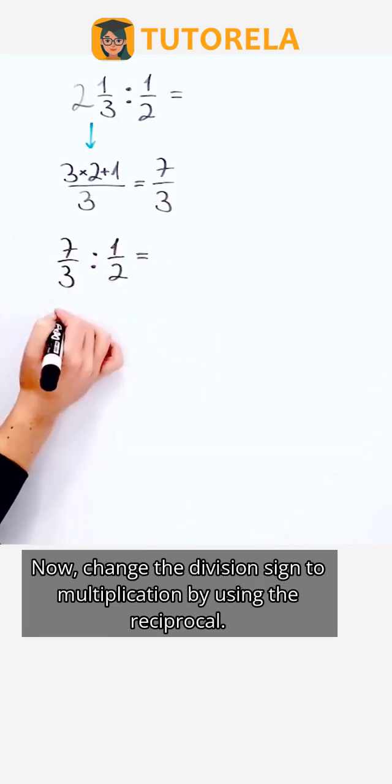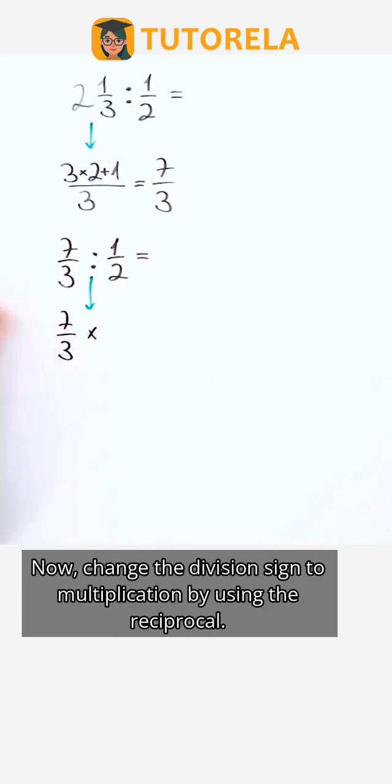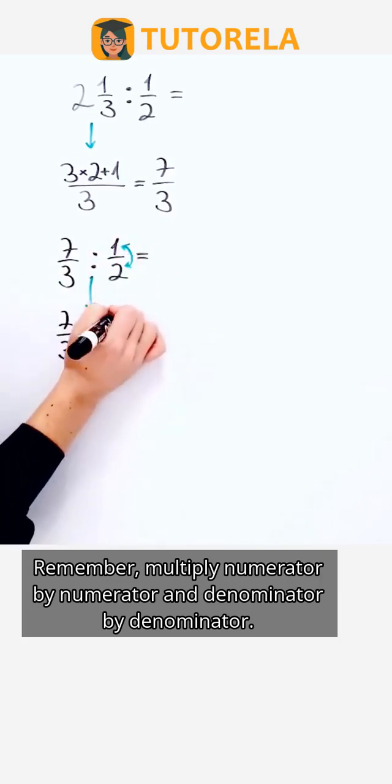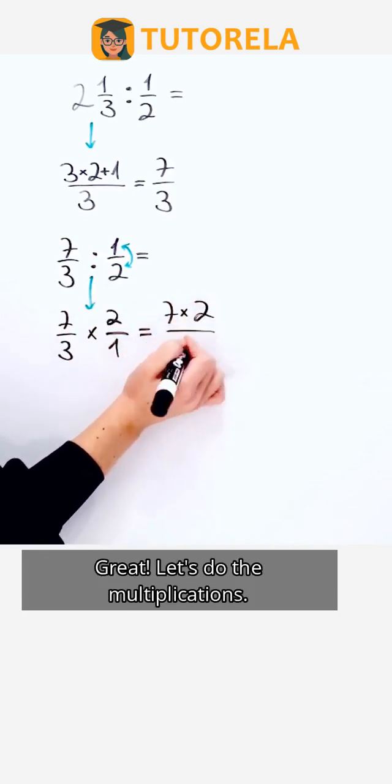Now, change the division sign to multiplication by using the reciprocal. Remember, multiply numerator by numerator and denominator by denominator. Great, let's do the multiplications.